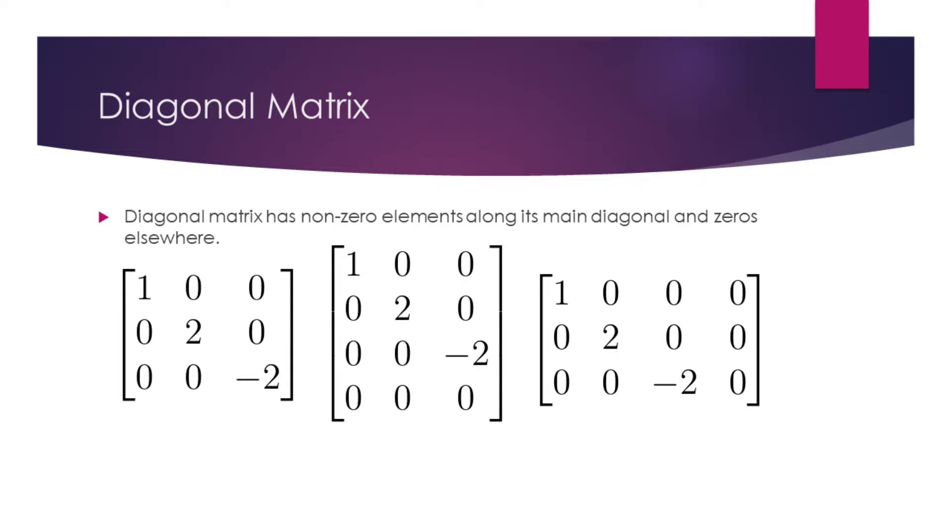Diagonal matrix has non-zero elements along its main diagonal and zeros elsewhere. The leftmost matrix, everywhere except the main diagonal, has zeros, and there are non-zero entries along the main diagonal. So this is a diagonal matrix.